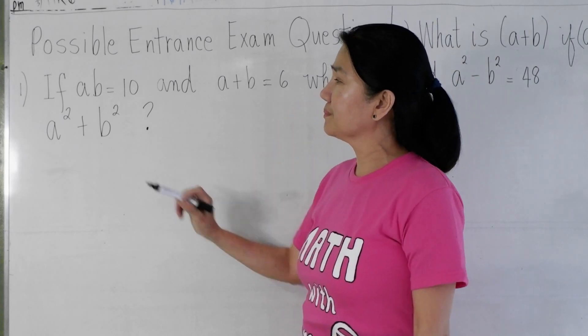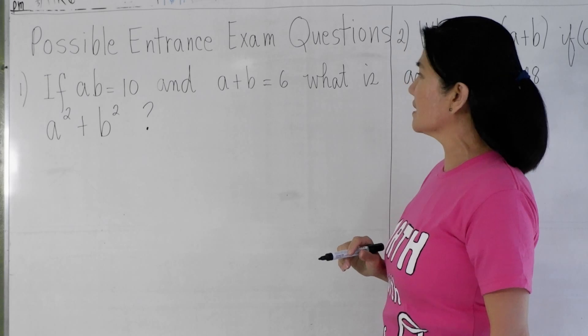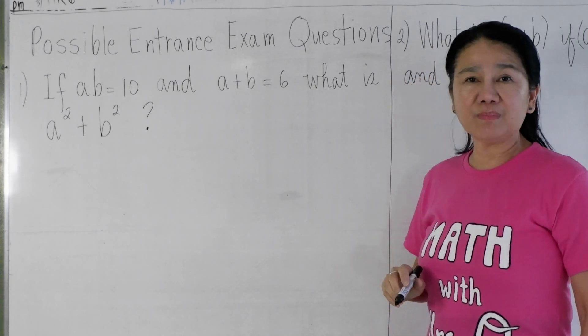Okay, problem number one. If AB equals 10 and A plus B equals 6, what is A squared plus B squared?